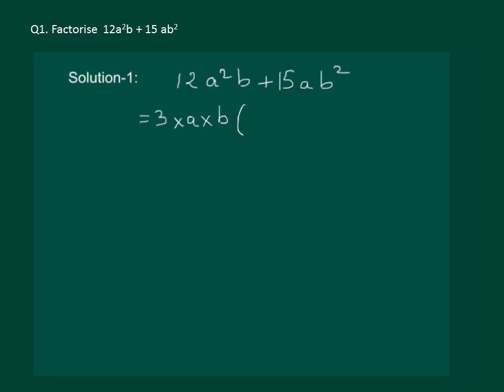Now we have to find out what remains in the bracket. So let us do some rough work to understand. We will divide first term 12a square b by 3ab. We get 3, 4s are 12. One a gets cancelled and b gets cancelled and we are left with 4a.